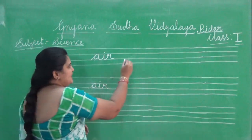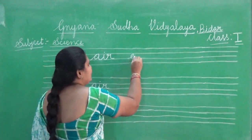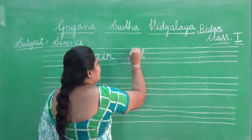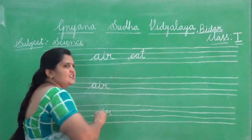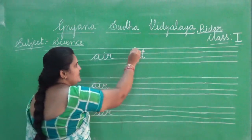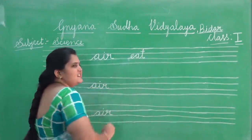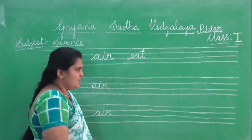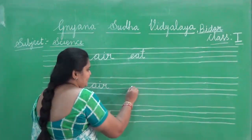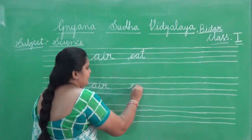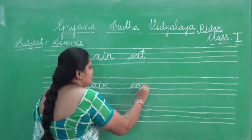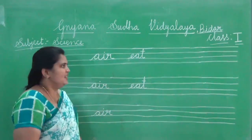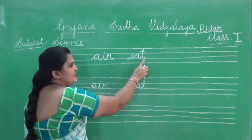Second word is E, A, and T. You are going to touch it in the first line. So I am going to repeat once again. These are the three letter words. Look at the board. E, A, and T — and the T you are going to touch it in the first line. Eat.